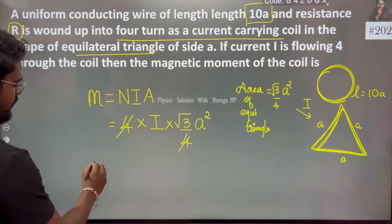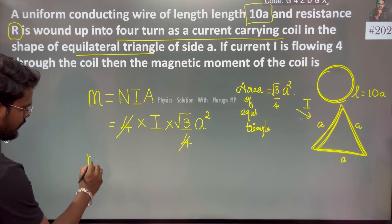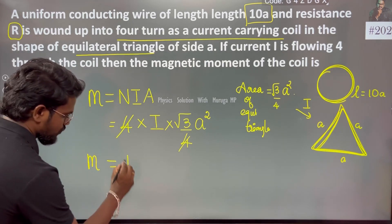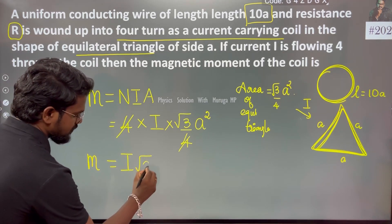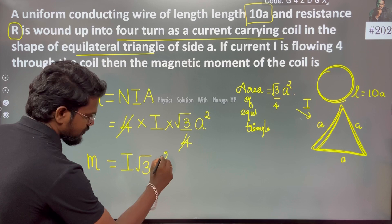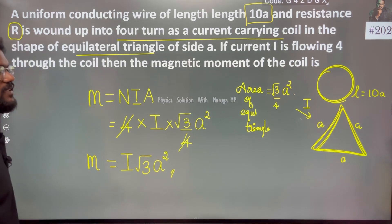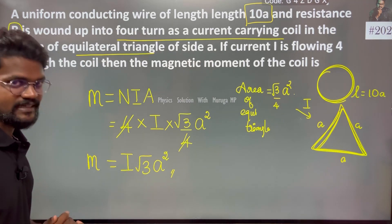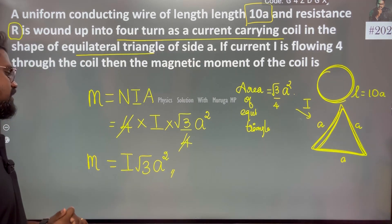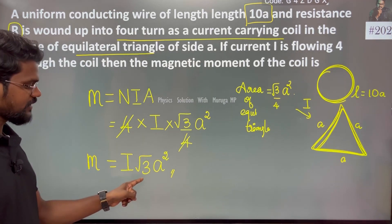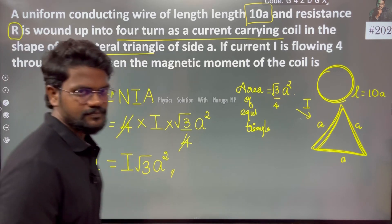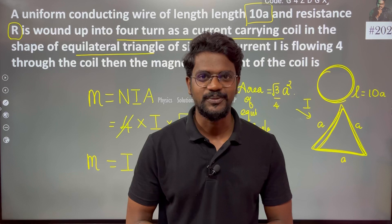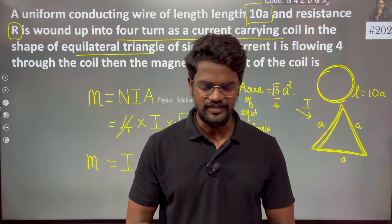The magnetic moment is very simple: M = I × √3 × a². So the equilateral triangle magnetic dipole moment is nothing but I times √3a². Thank you, hope this helps — with a smile.